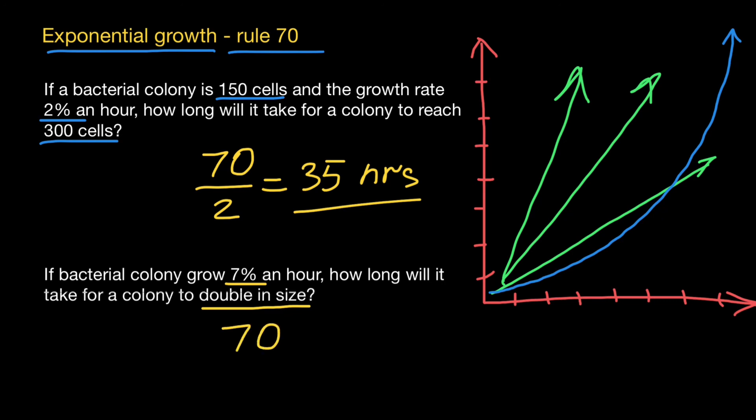Again, we are going to use rule 70. So we divide 70 by growth rate, which is 7%. And we are going to get an answer 10 hours.